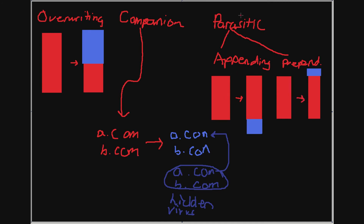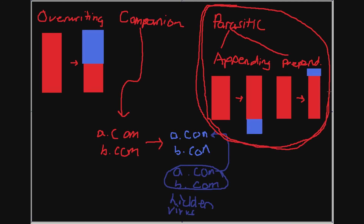Some famous parasitic viruses include Vienna, Jerusalem, and various Windows viruses. One other notable parasitic virus is CIH, which infects files by writing its code over empty spaces found in host files. Whenever you run a parasitic virus, control is directed to the virus first — part of the virus overwrites part of the host with a jump instruction that redirects control flow to the virus.